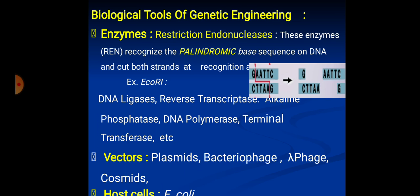The sticky ends are complementary to each other. A palindromic sequence contains a sequence of 4 or 6 nucleotides which read the same in either direction from the 5' end to the 3' end. Other important enzymes are: DNA ligase, which brings about the linking of DNA fragments; reverse transcriptase, which catalyzes the synthesis of a DNA strand on the mRNA; alkaline phosphatase, which digests the phosphate group at the 5' end, preventing re-circularization of the plasmid; and DNA polymerase, to catalyze a DNA strand on the template.